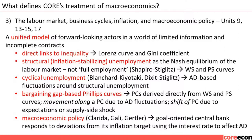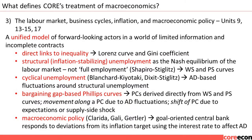The third dimension is the labour market, business cycles, inflation, and macro policy. This really starts from the labour market model in unit 6, continued in units 9, 10, 13 to 15, and 17. What we've tried to construct is a unified model of forward-looking actors in a world of limited information and incomplete contracts. Instead of teaching unemployment, fiscal policy, monetary policy, and inflation separately, we build these elements from the micro foundations — the decisions taken by different actors.